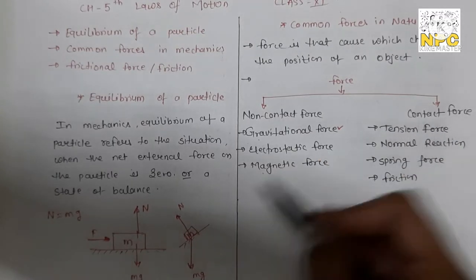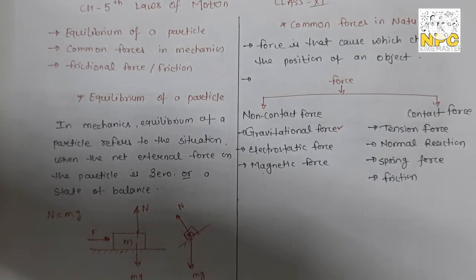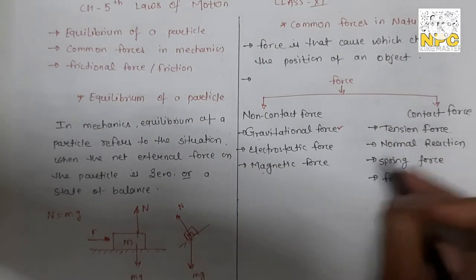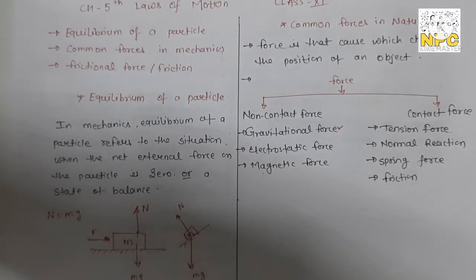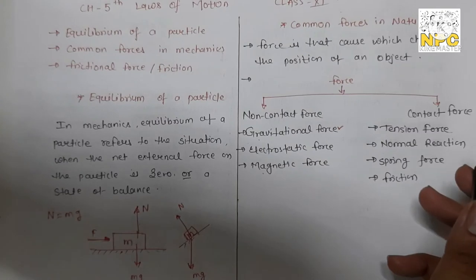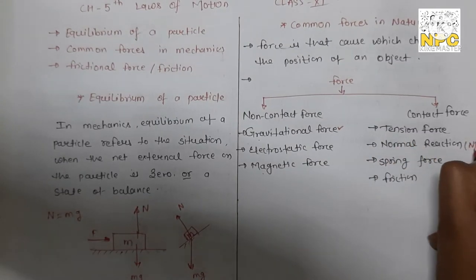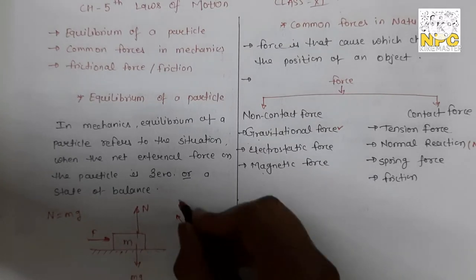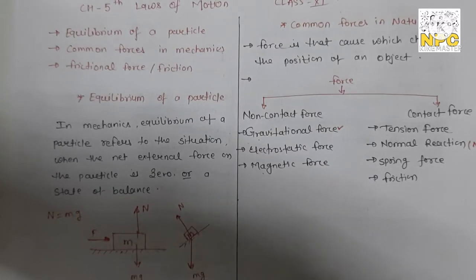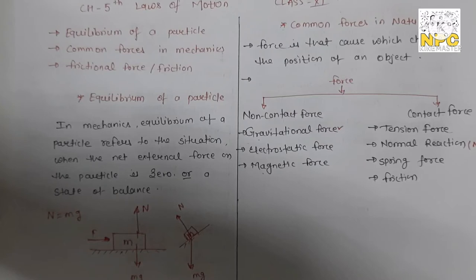In this chapter we will focus on contact forces. The main contact forces we study are: tension force, normal reaction — which is the force perpendicular to the surface, denoted capital N — spring force, which acts when you take a rope or spring, and finally friction, which we will cover in the next slide.